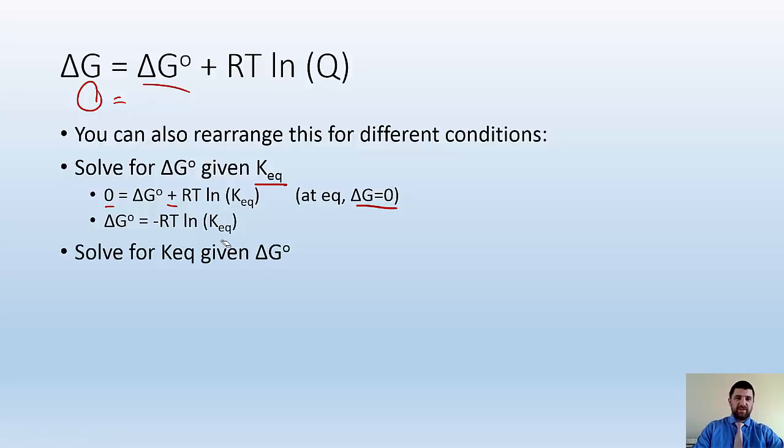So solve for KEQ given delta G0. That's a little different. I can rearrange this equation now to solve for KEQ. How do I do that? Well, first, I got to get rid of the negative RT. So I divide negative RT onto the other side, and now I got to get rid of this LN. How do I get rid of the natural log?